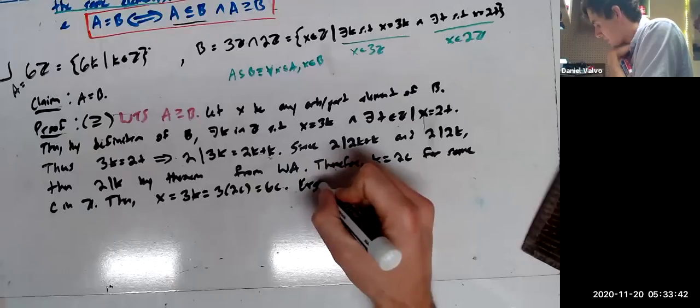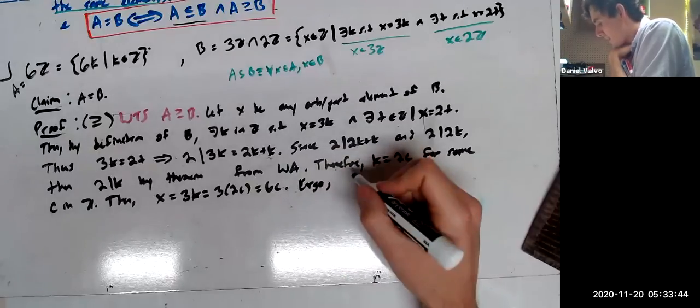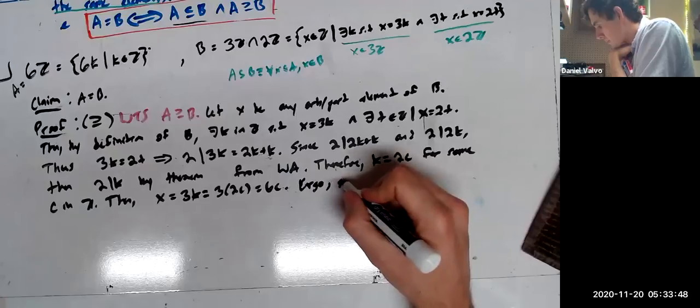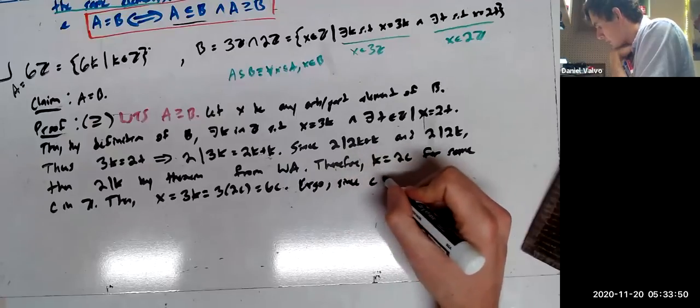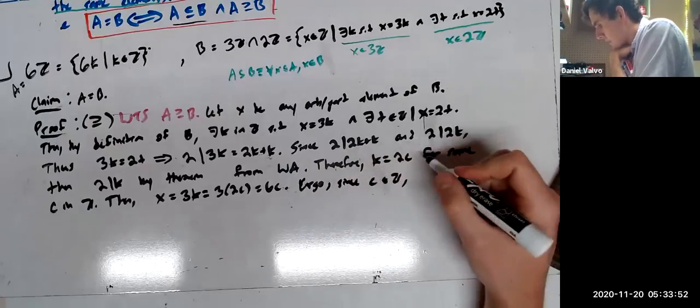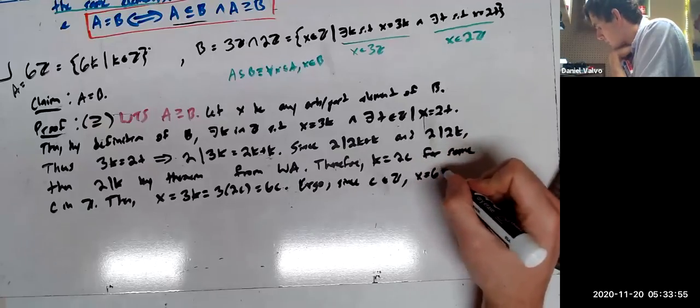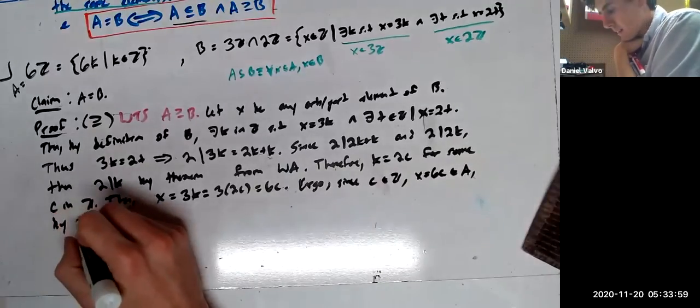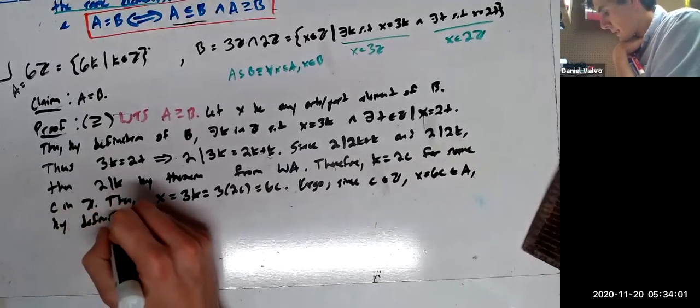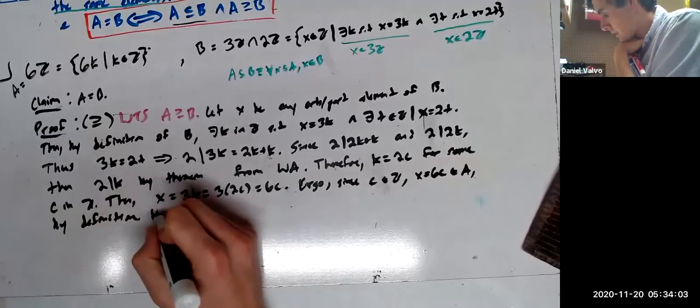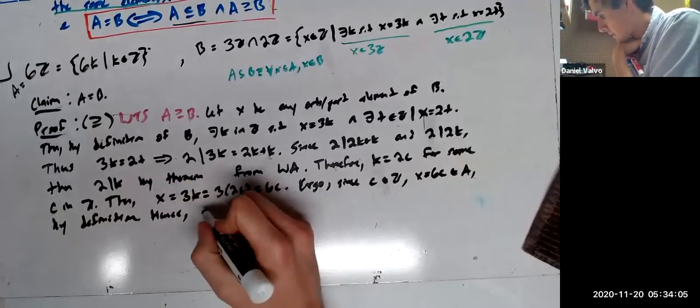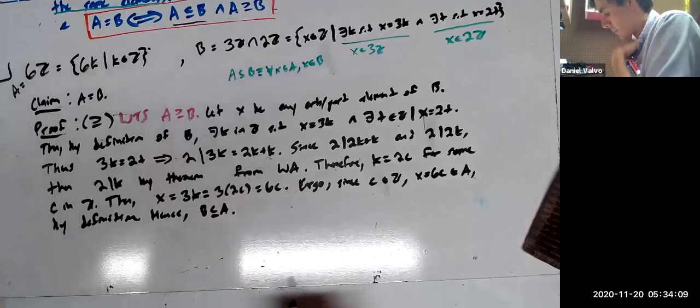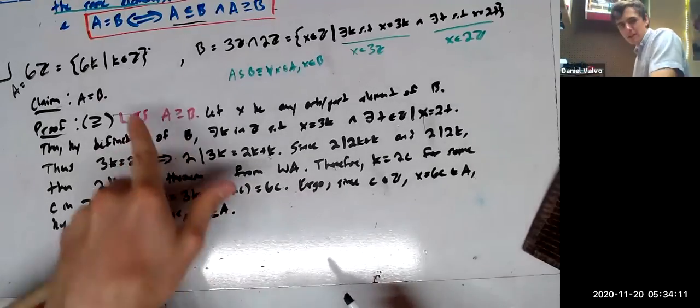Ergo, sorry, he's therefore, ergo, since c is in Z, x, which equals 6c, is in A, by definition, hence, B is contained in A. Or A contains B, same thing.